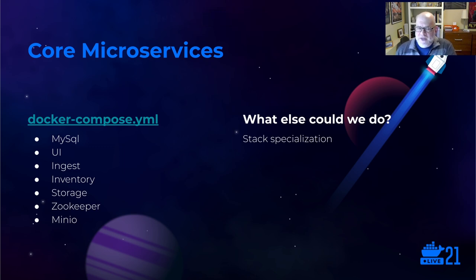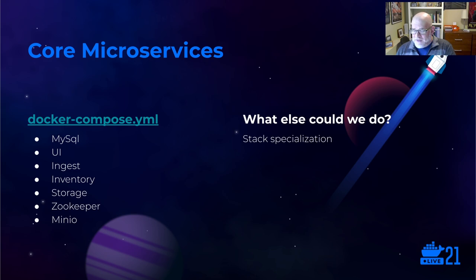The Docker Compose file defines the set of core microservices — the MySQL container, user interface, ingest, inventory, and storage services, the ZooKeeper queuing system, and Minio for cloud storage. One thing I love about Docker Compose is the ability to combine together multiple Docker Compose files and run interesting combinations of services.